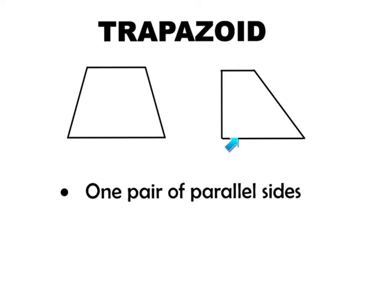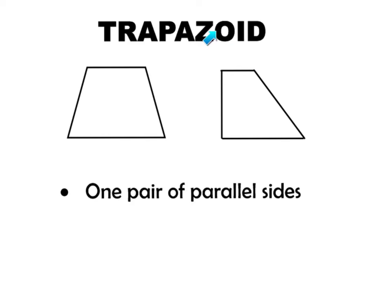This second example also has one pair of parallel sides. The top line is parallel to the bottom line and they will never cross. But this line segment and this line segment are not parallel because eventually if they continued, they would definitely intersect. Therefore, both of these examples are trapezoids because they each have one pair of parallel sides. Make sure you write this down in your notes.